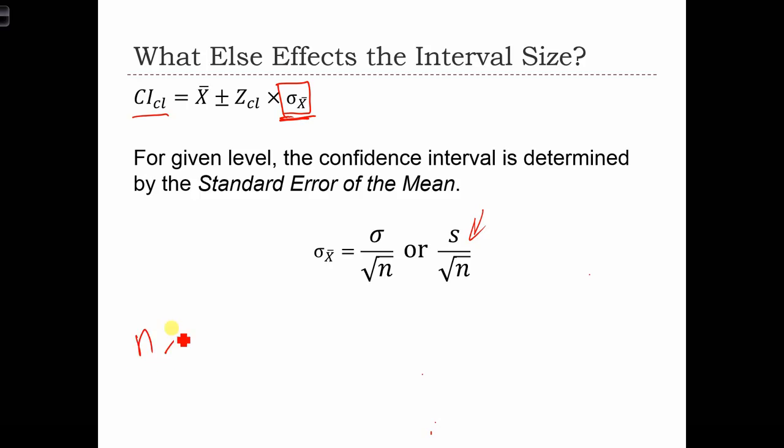If n increases, then the fraction of s over root n is going to decrease. So the standard error of the mean is going to decrease. In which case, if we have a bigger sample size, all else being equal, we're going to have a smaller confidence interval for any given confidence level.